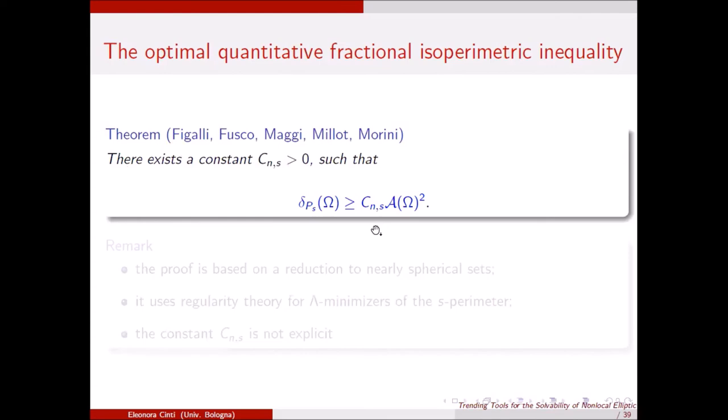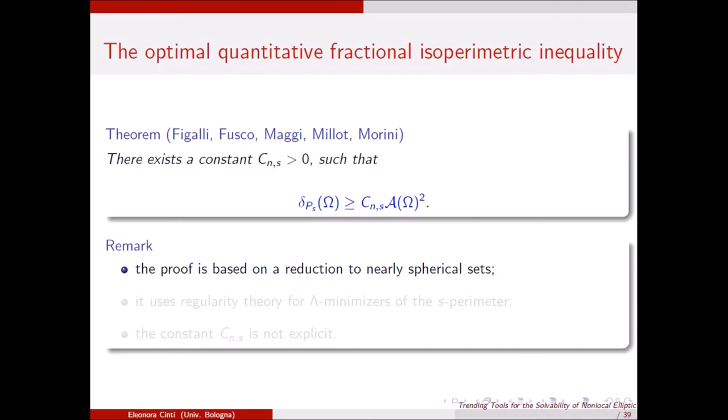The optimal version of the fractional isoperimetric inequality — again with exponent 2 — was proven in a more recent paper by Fusco, Millot, Morini together with Figalli and Maggi. Remarkably, the optimal exponent 2 does not depend on s. This proof is based on a selection principle using regularity theory for quasi-minimizers of the s-perimeter, and again the constant is not explicit.